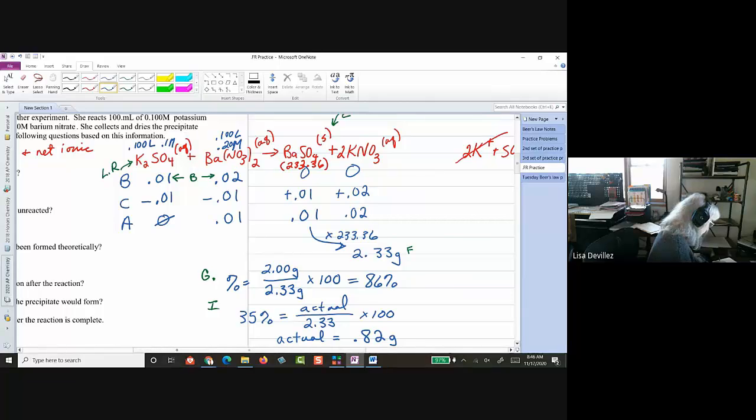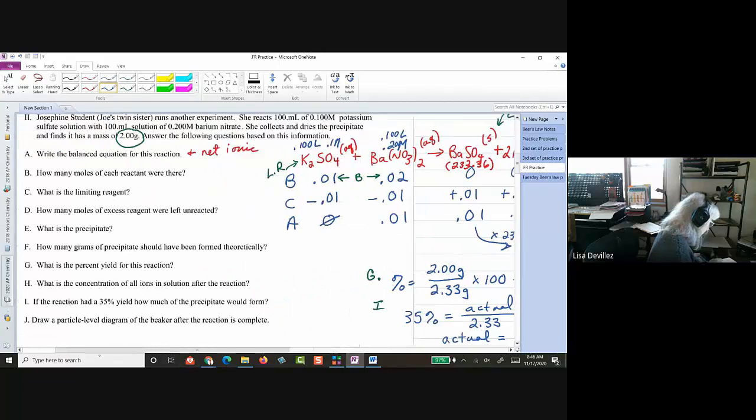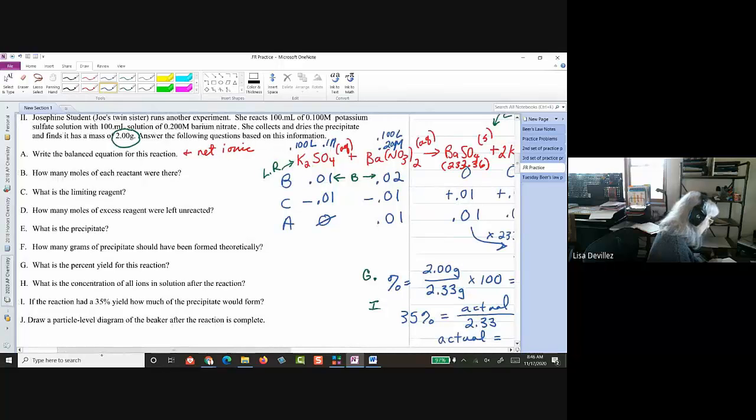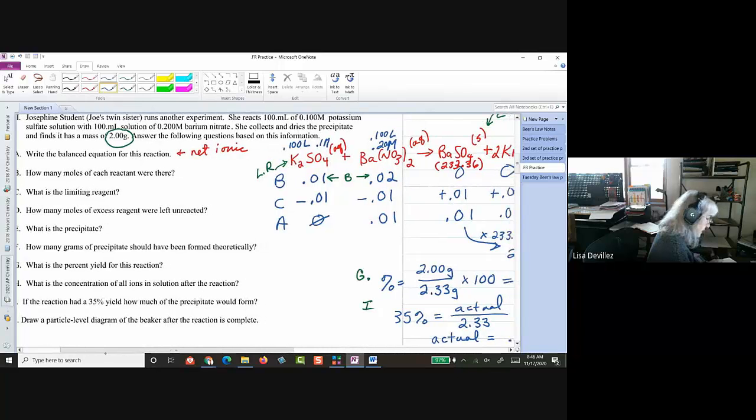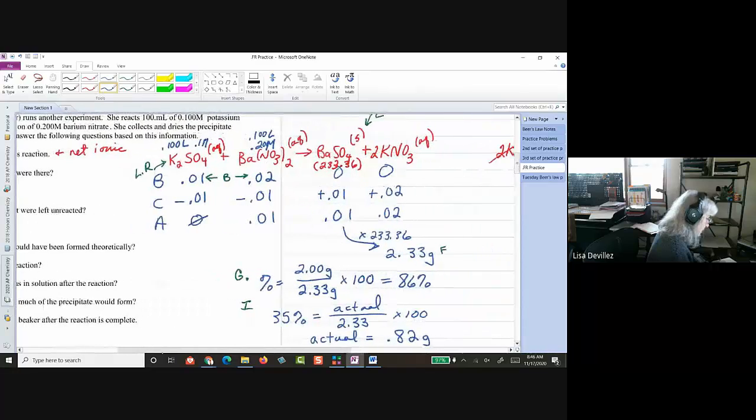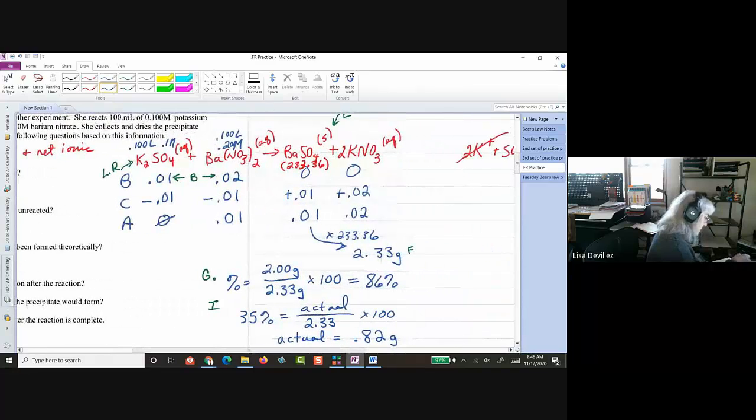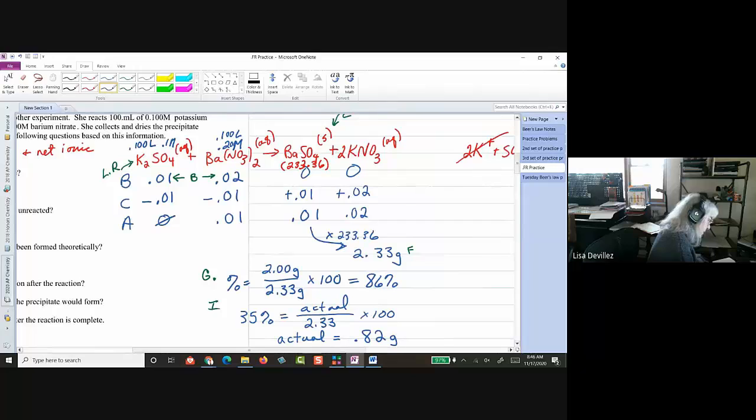So, if I, all right, I'm going to go back to H. It wants to know the concentration of all the ions in solution after the reaction. Okay. So, here, all right. One thing I want to do is I'm going to just kind of put a box around that. That's my precipitate, so to remind me that that's a solid, and so it doesn't affect the solution.